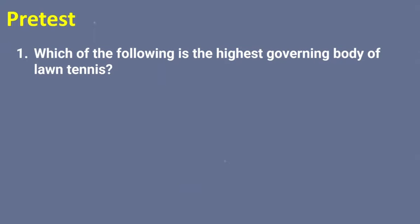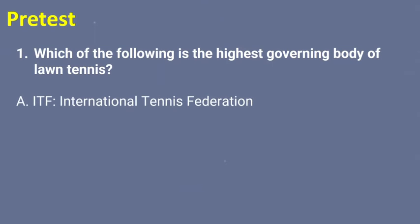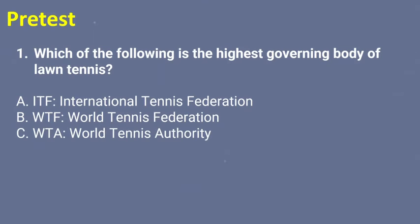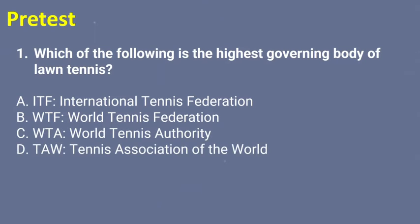Number one: which of the following is the highest governing body of lawn tennis? A — ITF or International Tennis Federation, B — WTF World Tennis Federation, C — WTA World Tennis Authority, or D — TAW Tennis Association of the World. The answer for number one is ITF, International Tennis Federation.